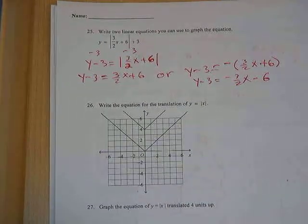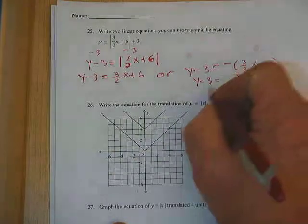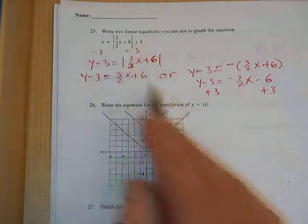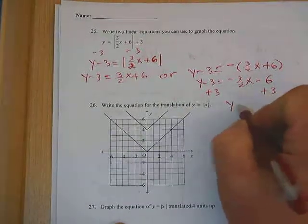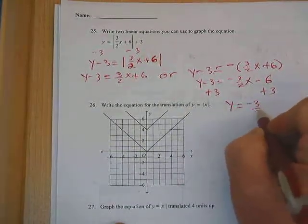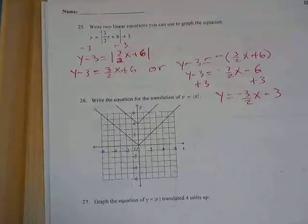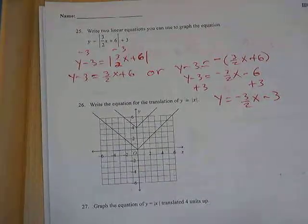Now how am I going to get y by itself to get this in slope intercept form? Add 3, and that's the idea that whatever we undid here at the beginning, we have to do it back to finish the problem, and we get y equals negative 3 halves x minus 3, and that's the equation of one of the arms.